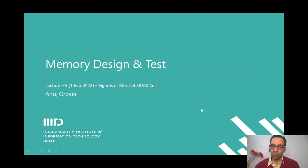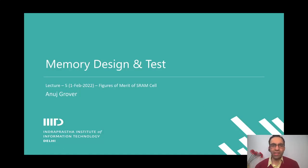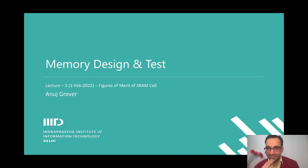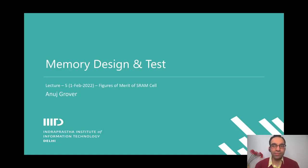Coming back to figures of merit — the ones we saw in the last class include: cell current, stability, write margin, write time, and retention voltage. Let's quickly look at each of these figures of merit in detail.